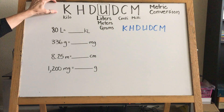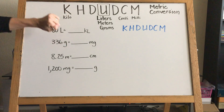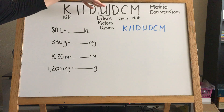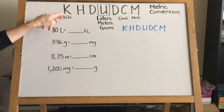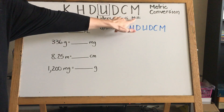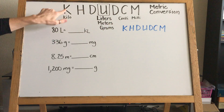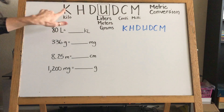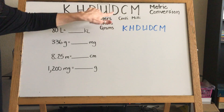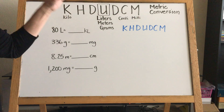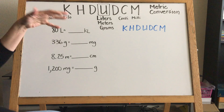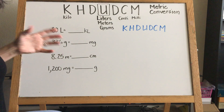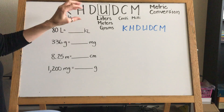The easy thing about the metric system is that every time you move, you are either dividing by 10 or multiplying by 10. So if you're going from kilo to milli, you're dividing by 10 each step. If you're going from milli to kilo, you're multiplying by 10 each time. The system is times 10 and divided by 10, which makes it really easy.